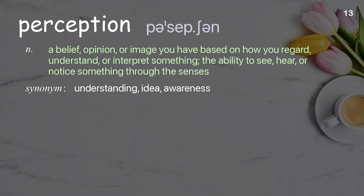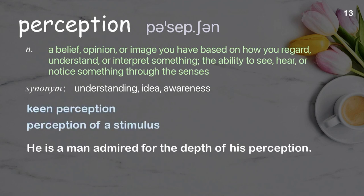Perception. A belief, opinion, or image you have based on how you regard, understand, or interpret something; the ability to see, hear, or notice something through the senses. Examples: keen perception, perception of a stimulus. He is a man admired for the depth of his perception.